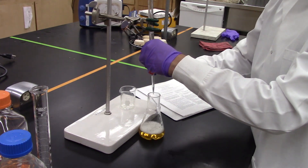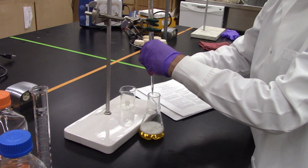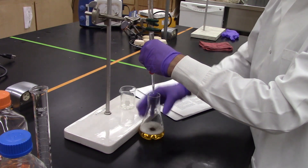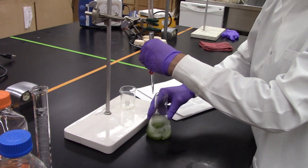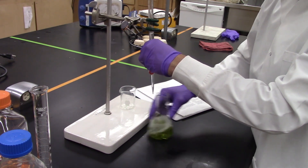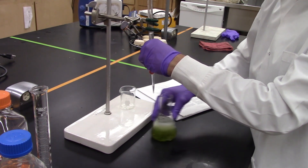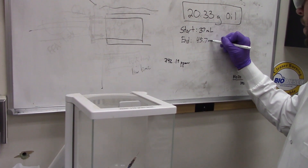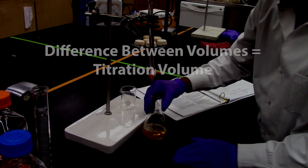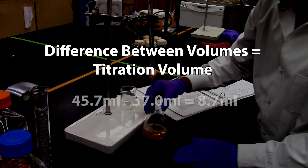Titrate the solvent-oil mixture with potassium hydroxide until the color changes from orange to green. The color change should last at least 15 seconds. Then record the ending volume of titrant and subtract this to get the titration volume.